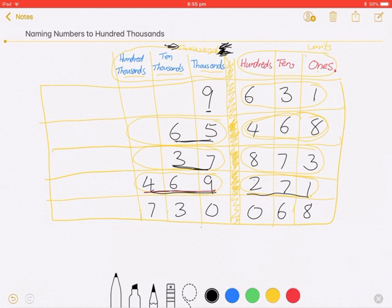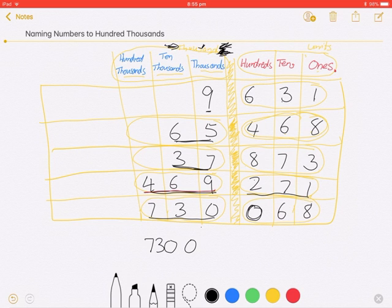They're still placeholders so they're still counting as part of that three. Seven hundred and thirty thousand. Now this bit looks a bit tricky, doesn't it? No, it's not really. Well, the only bit I can say in there is this bit, which is 68. So it's seven hundred and thirty thousand and sixty-eight.